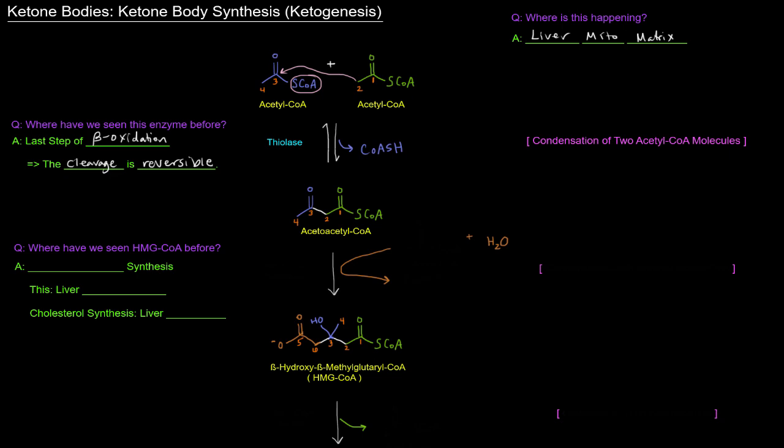So that gives us acetoacetyl-CoA. And the next step is going to take this acetoacetyl-CoA and turn it into this molecule here, HMG-CoA. For short, the actual full name is beta-hydroxy-beta-methylglutaryl-CoA. And the way this forms, you'll notice that this part here of the molecule is new. It's got carbons five and six. Where did those come from? They came from another acetyl-CoA molecule.